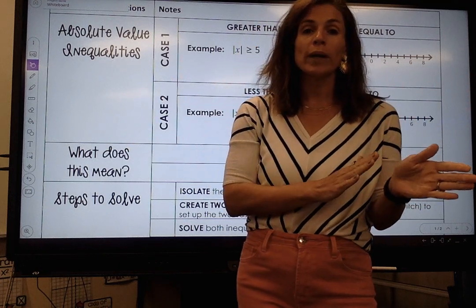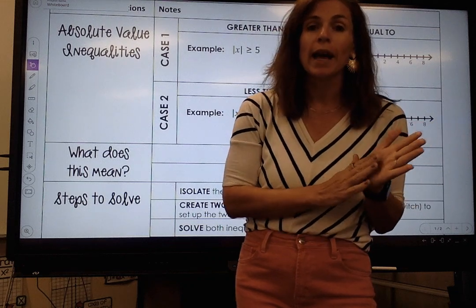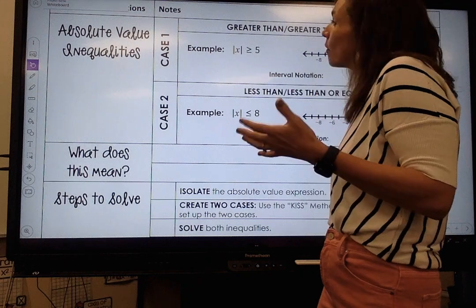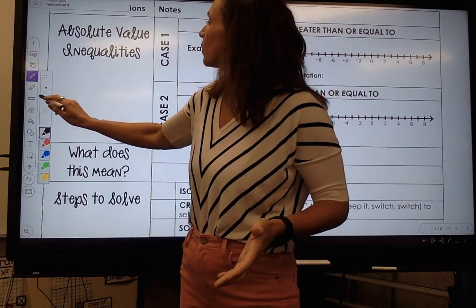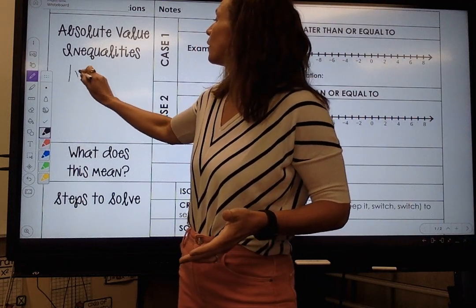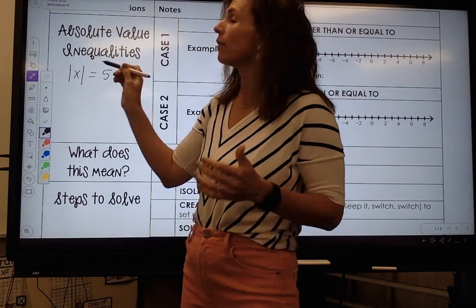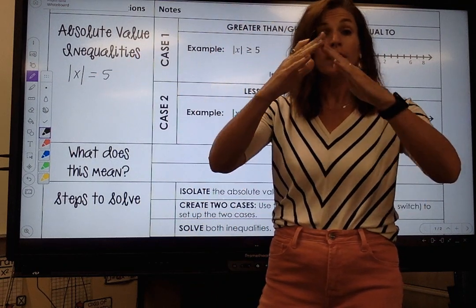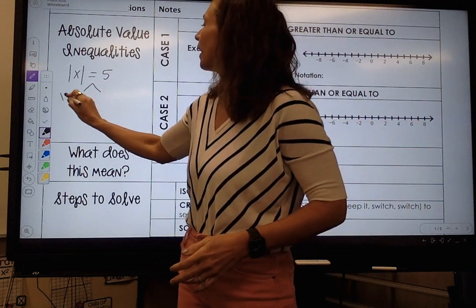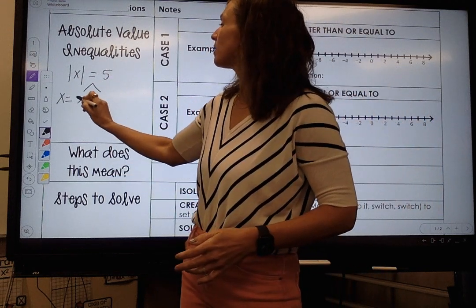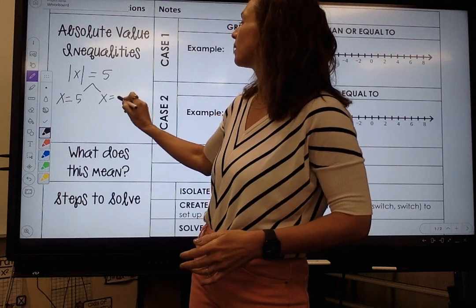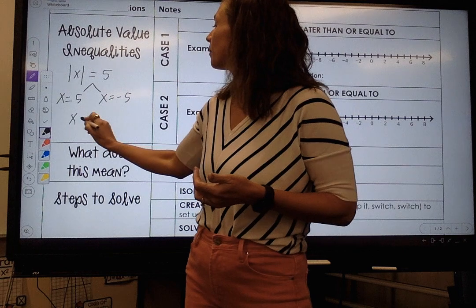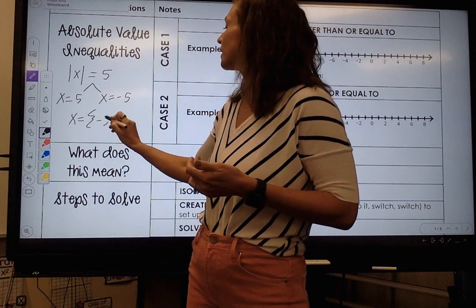Remember when we were solving absolute value equations, we had to do something special. If we had the absolute value of x equals 5, we got the absolute value by itself and then we branched. We said x is going to be set equal to the positive value and x is going to be set equal to the negative value, and then we put it in brackets, always least to greatest.